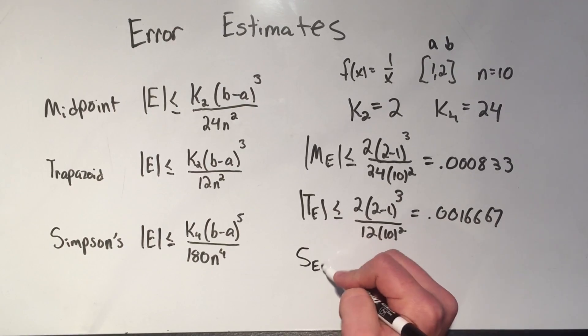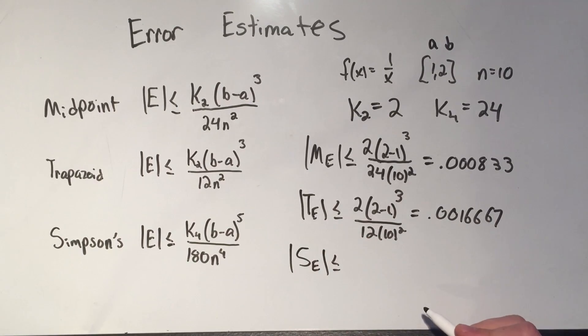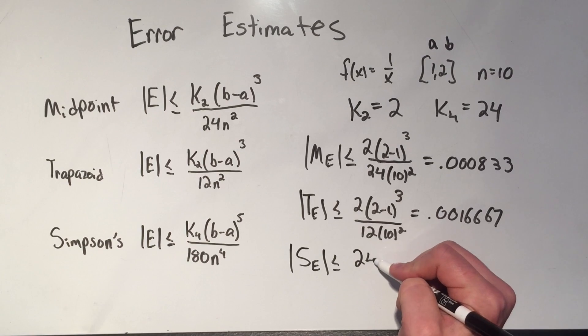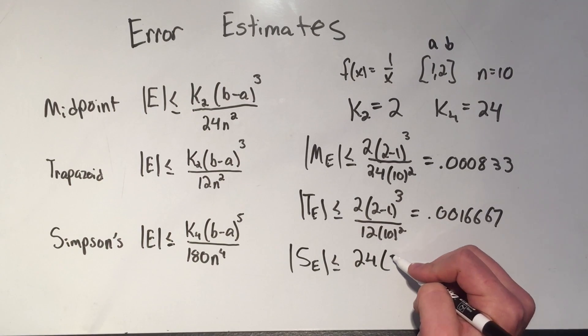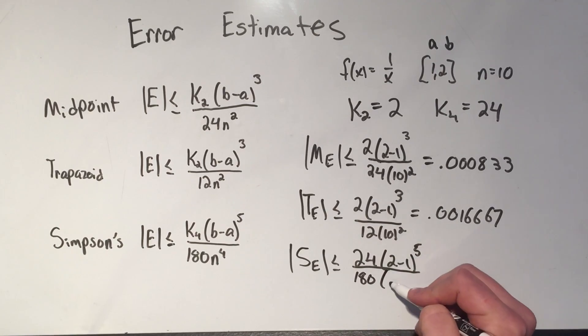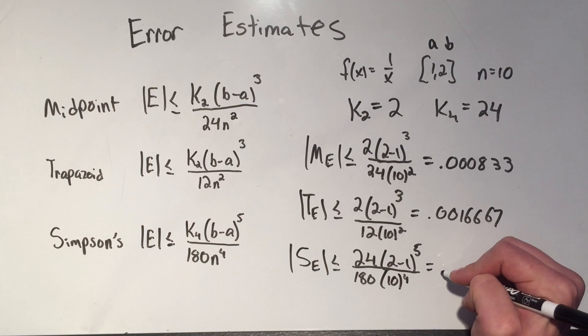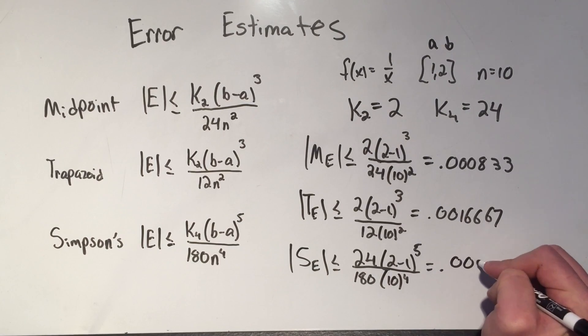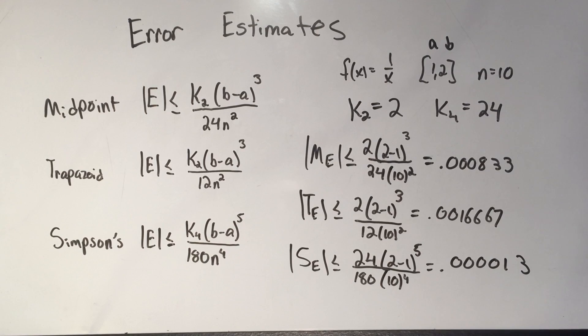One more, let's do the Simpson's error for this. That's k₄, that's 24, b minus a, 2 minus 1 to the 5th, over 180, n is 10 to the 4th, and if you plug that into the calculator, you're going to get 0.000013. So even better. So Simpson's rule is an even better approximation for the definite integral in this case.